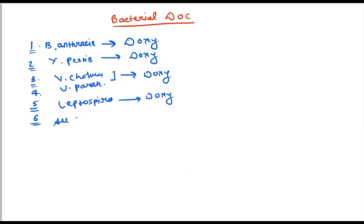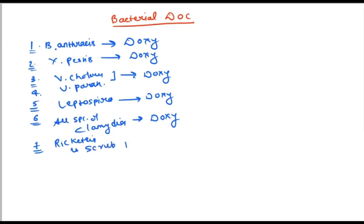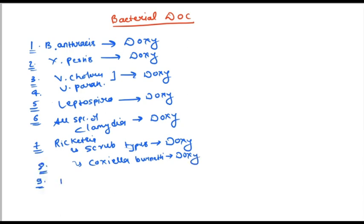The sixth one is important: all species of Chlamydia — we can prescribe doxycycline. For Rickettsia, like scrub typhus, and Coxiella burnetii, we also give doxycycline. For Bartonella, we prescribe the same drug: doxycycline. So nine bacteria, one drug — doxycycline.